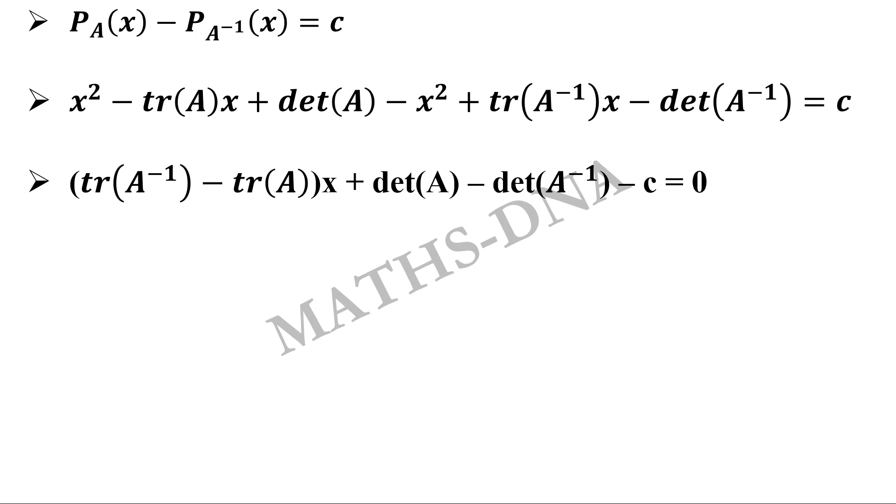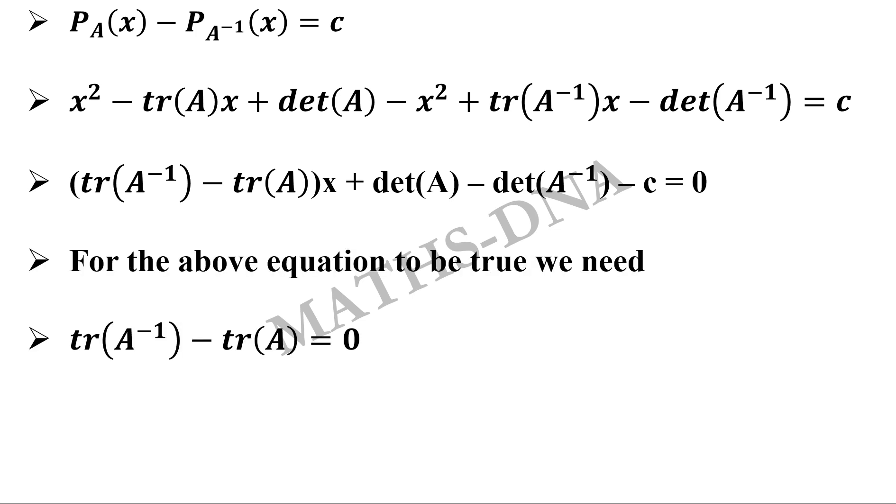For the above equation to be true, we need tr(A^-1) - tr(A) equals to 0. This implies tr(A^-1) equals tr(A), because we can adjust our values depending on A and A inverse.